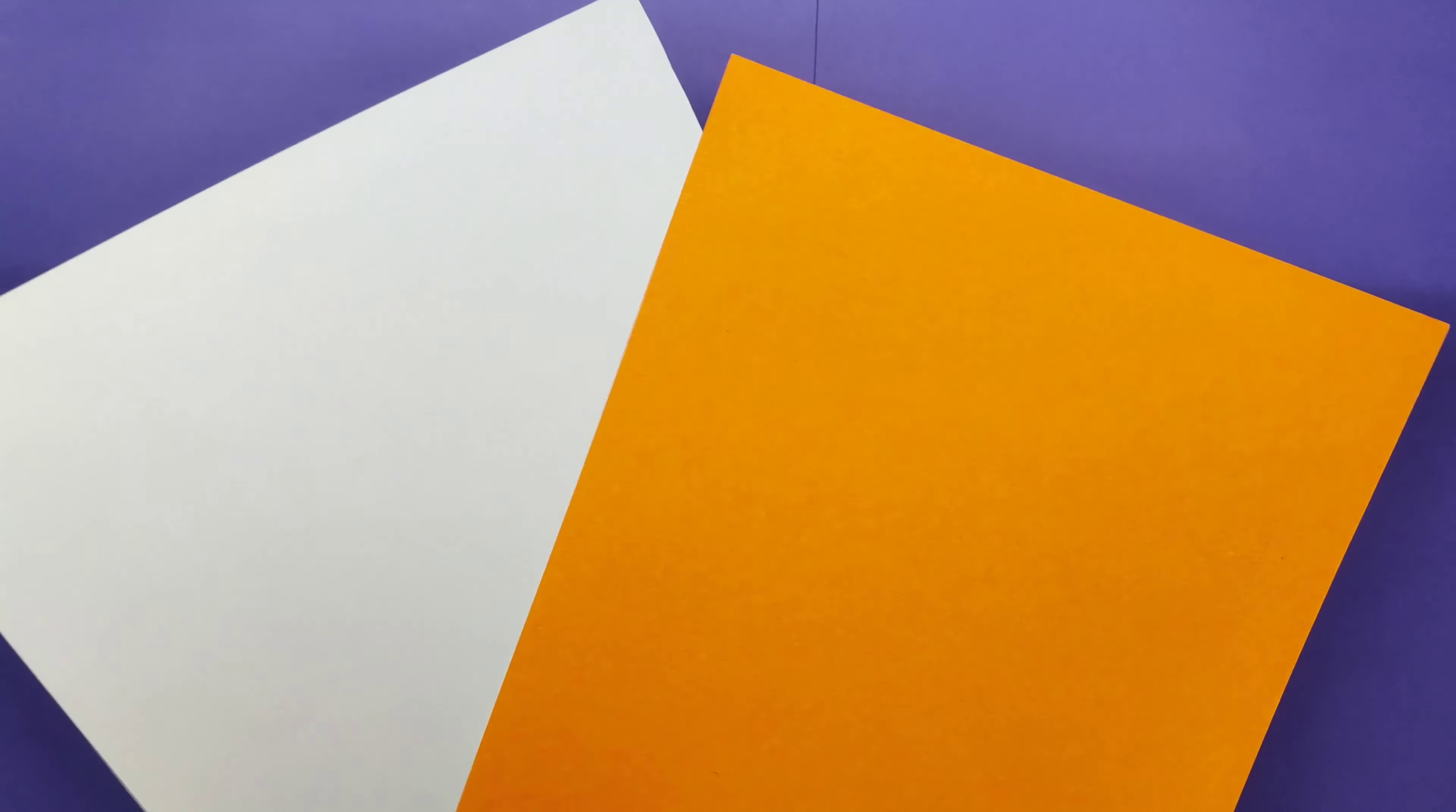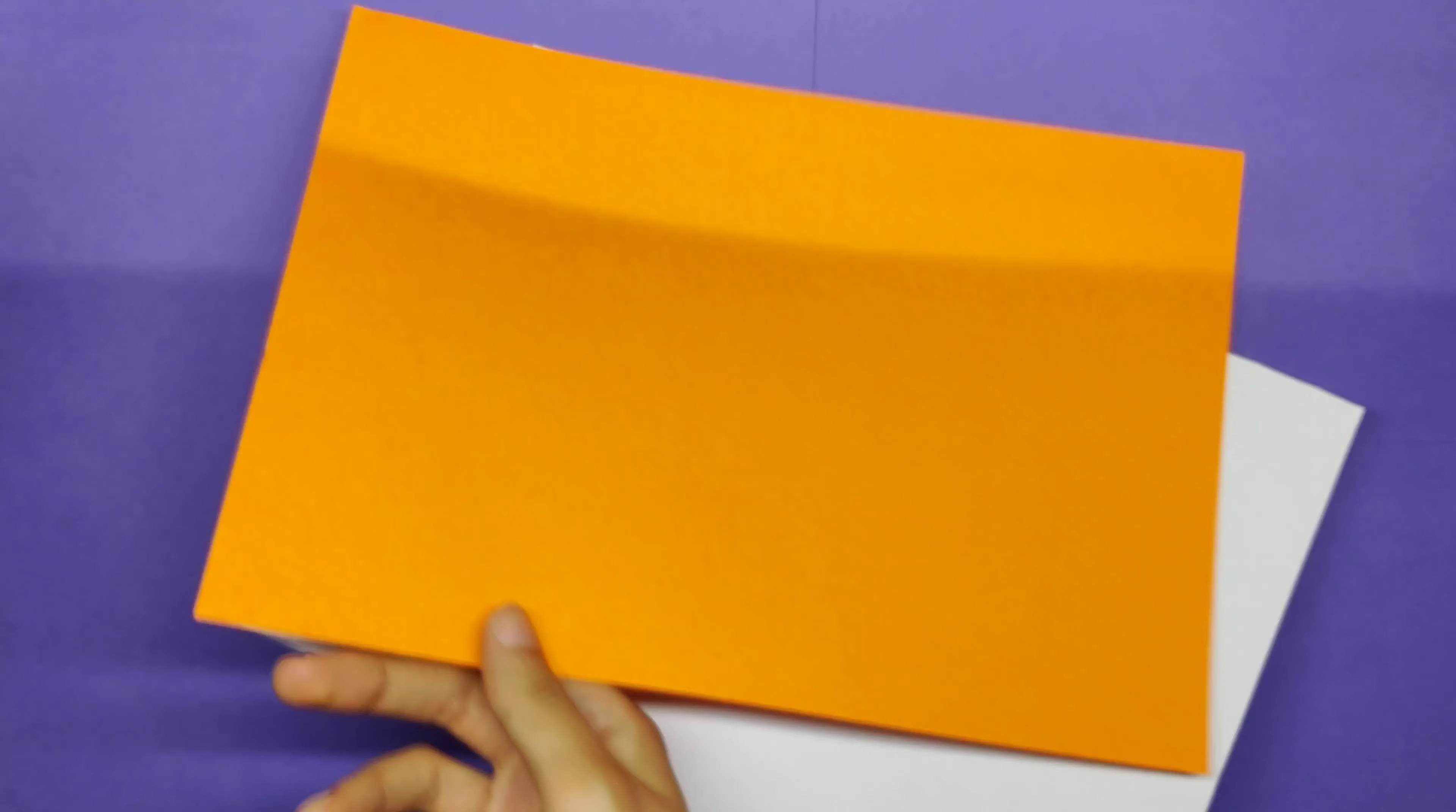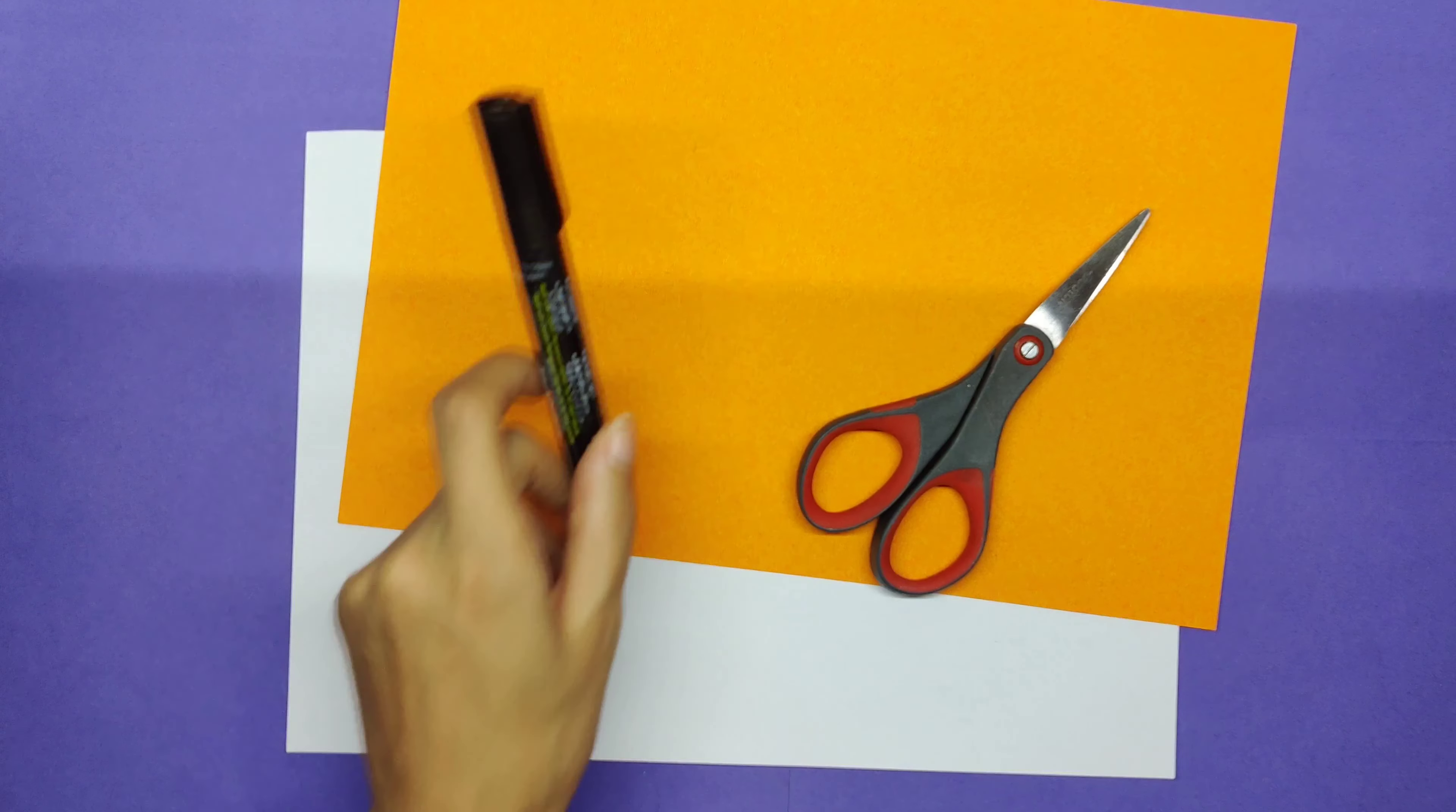Origami is a Japanese word that means folding paper and that's exactly what we're going to do right now. For that you will need two pieces of paper. I'm using here two A4 paper.